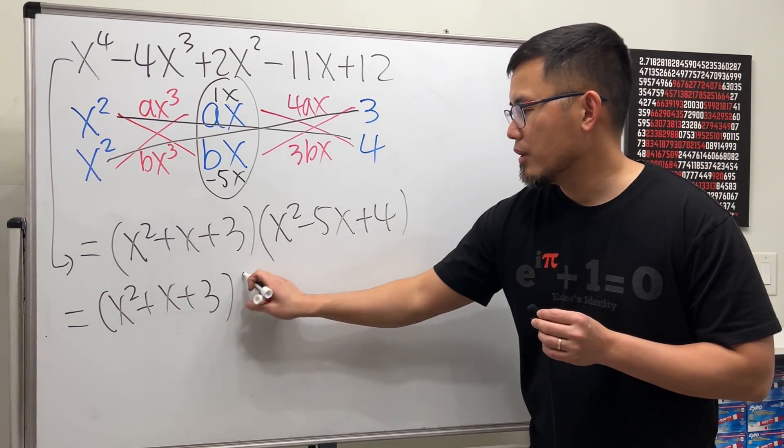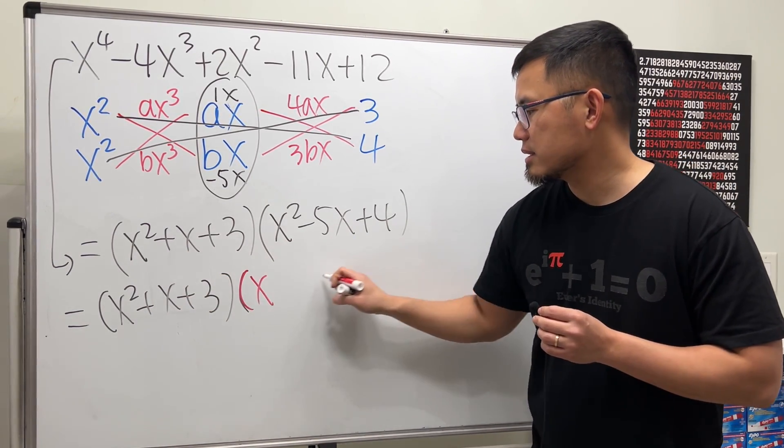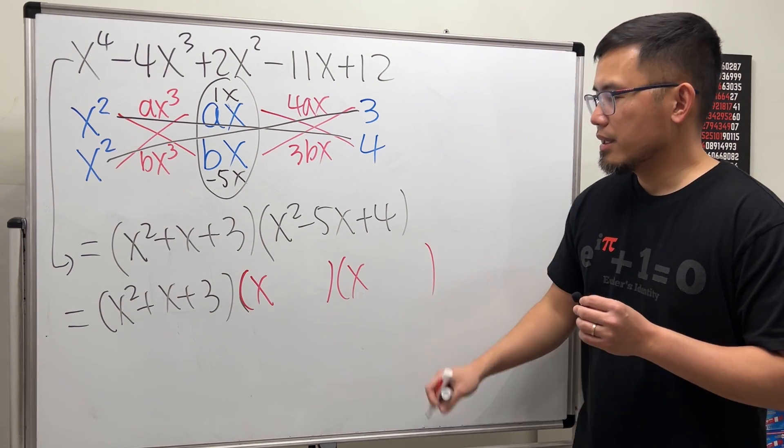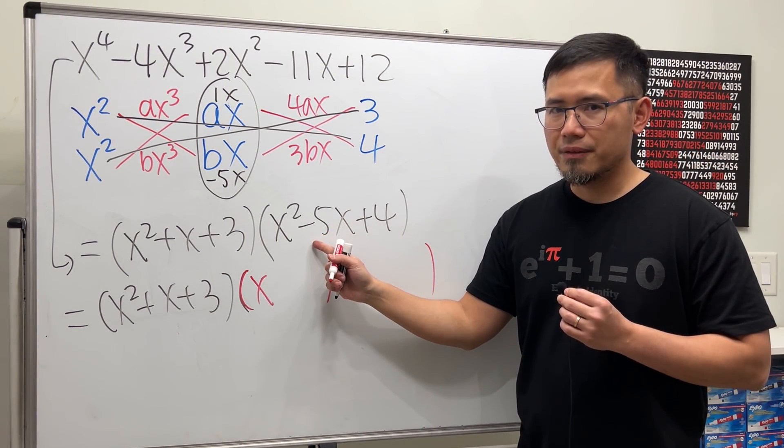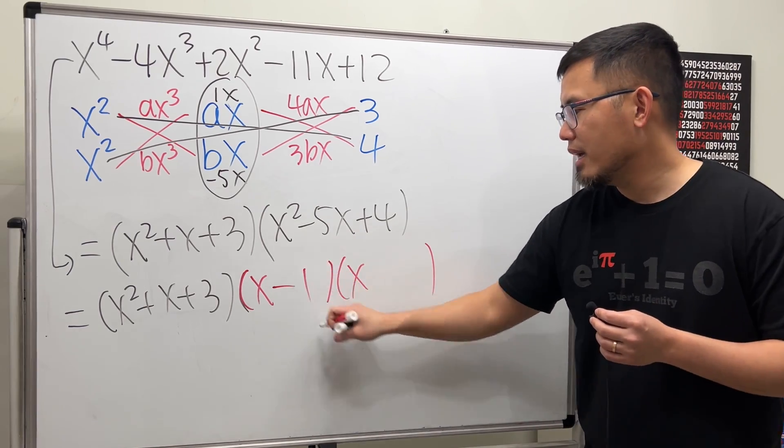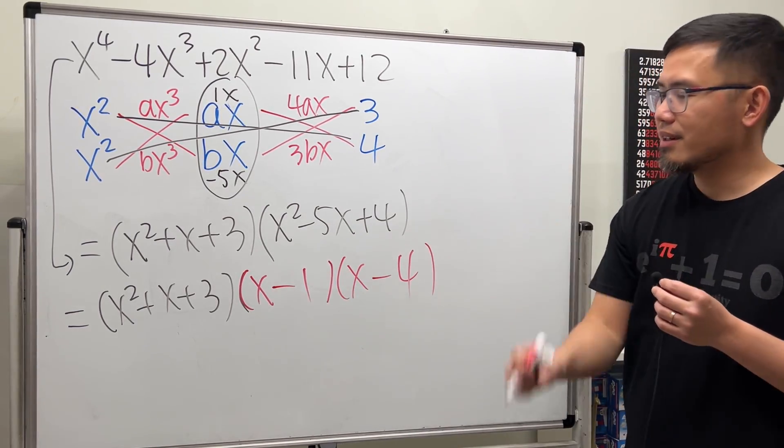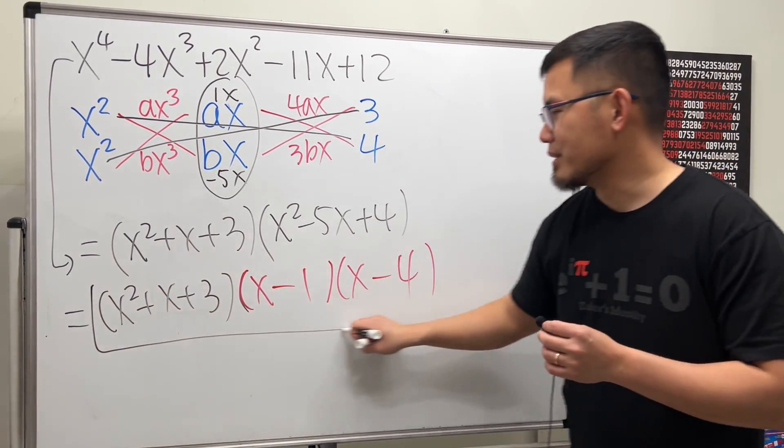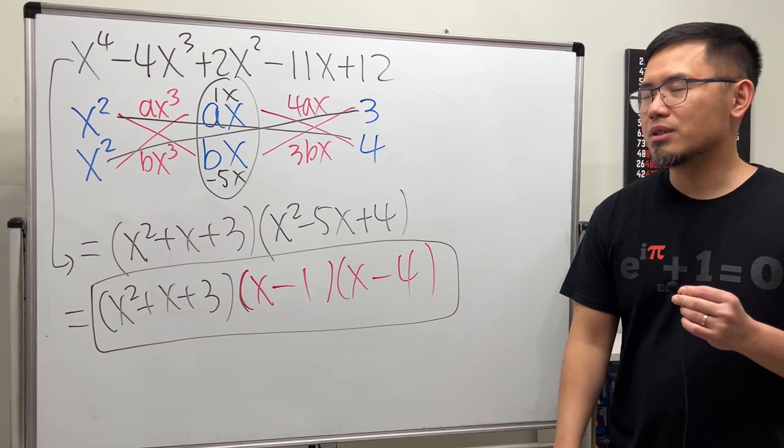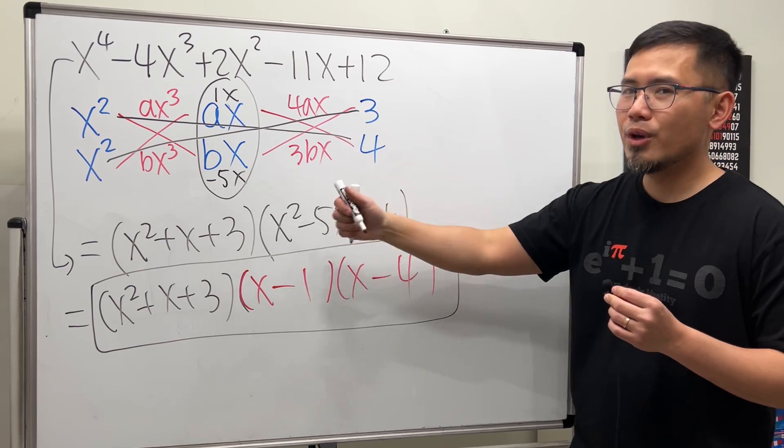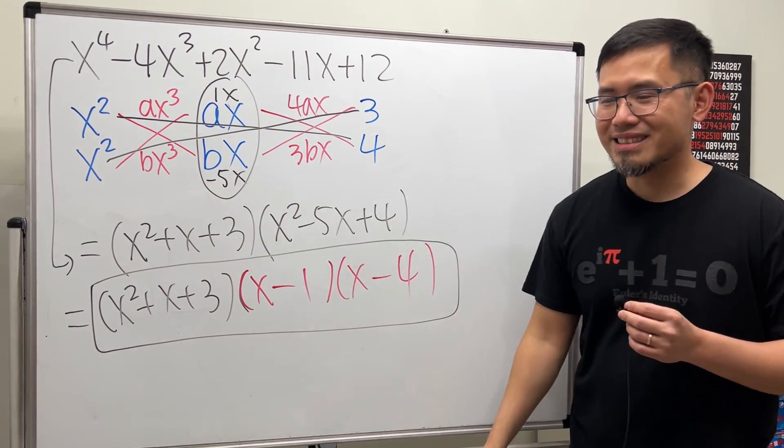And then for this right here, let's just go ahead and put down x times x. What times what gives us positive 4 and together we get negative 5. Negative 1 and negative 4. Done. So, this right here is another method that you can possibly use to factor a fourth polynomial that's fourth degree. That's it.